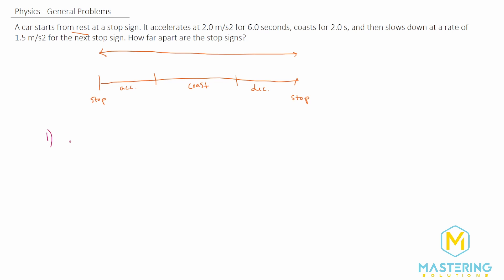For the first section, let's list the variables we know. They tell us we're starting from rest, so the initial velocity is zero meters per second. We accelerate at two meters per second squared, so acceleration is positive two meters per second squared, and the time for this first section is six seconds. We can use the kinematic equation, which is an expansion of the acceleration formula: v_final equals v_initial plus acceleration times time.